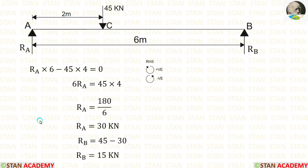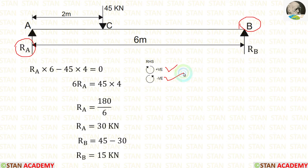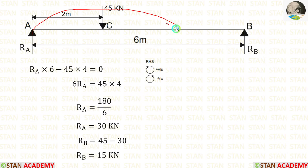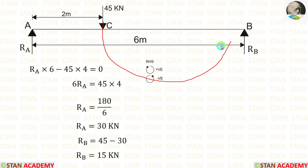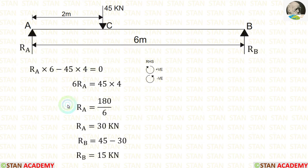Now let us calculate the reactions. First, let us calculate Ra by taking moment about B. Moving from the right-hand side, clockwise is positive and anti-clockwise is negative. Ra acts towards point B in the clockwise direction, so it is positive, with distance 6 m: Ra × 6. The 45 kN load acts anti-clockwise, so minus 45 × 4. Finally, Ra = 30 kN.